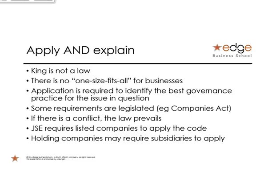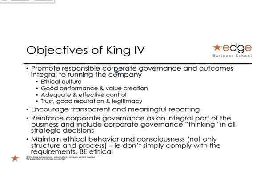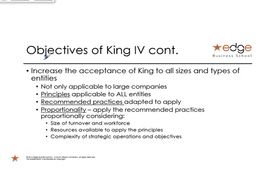The objectives of King — again, you'll see those words: ethics, responsibility, social, environment. Just be aware of the common language. It's broken up into 17 principles — let's call those the little chapters. Each principle has a number of recommendations explaining what to do to achieve that goal. We spoke about proportionality: if you're a tiny entity, you can explain it's just not relevant.